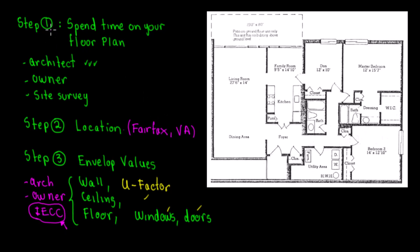Now let's start with step number one — spend time analyzing your plan. On the right side we have the condominium floor plan. We need to identify the main entrance first. The main entrance is at this door, and this is the corridor. This front door serves as your reference point for orientation.